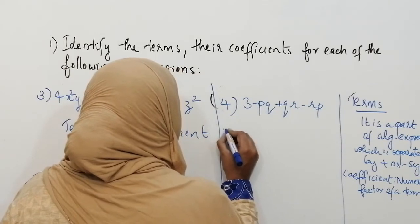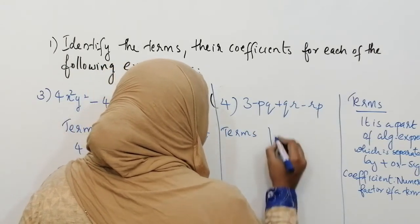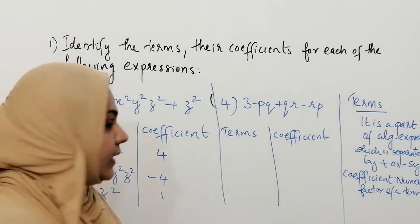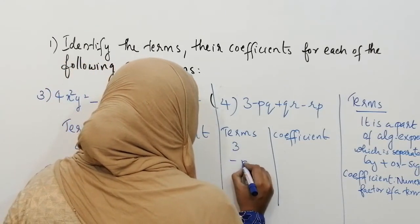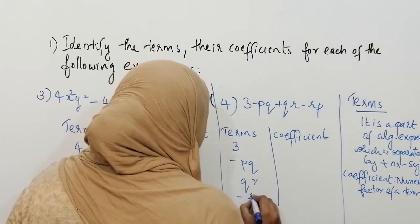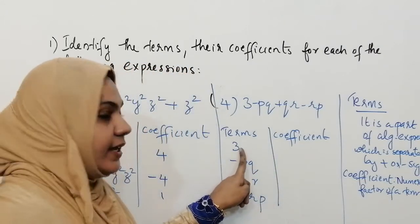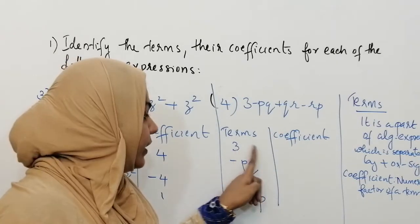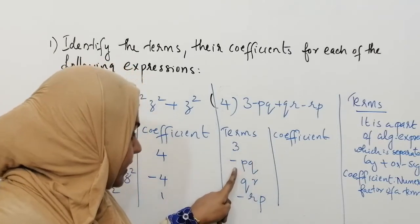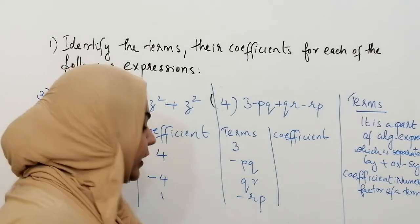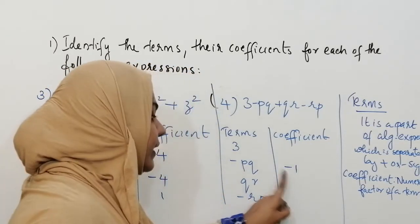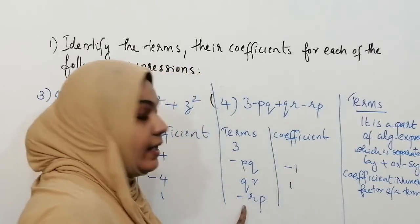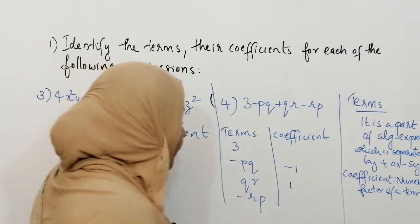Now we can do the fourth question. Here in this expression there are four terms. What is the coefficient of the constant 3? There is no number multiplied with a variable here — this is a constant, so we do not consider it a coefficient. The coefficient of minus pq is minus 1, because minus 1 into pq gives minus pq. The coefficient of qr is 1, because 1 into qr gives qr. And the coefficient of minus rp is minus 1.